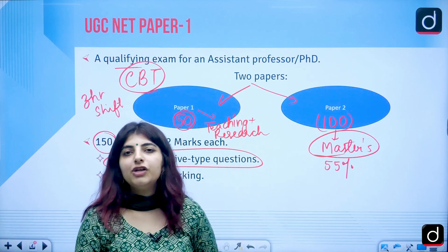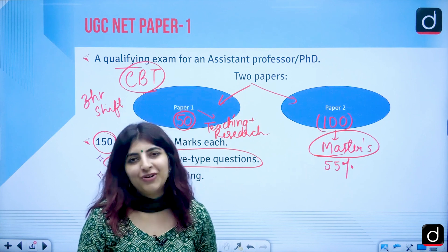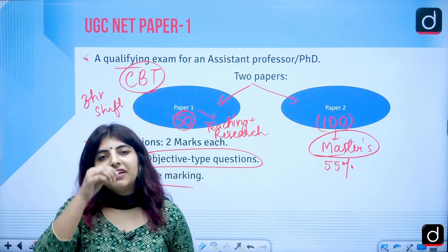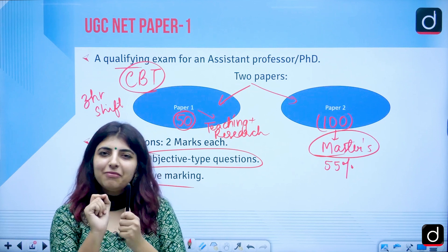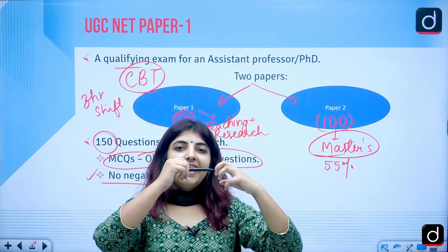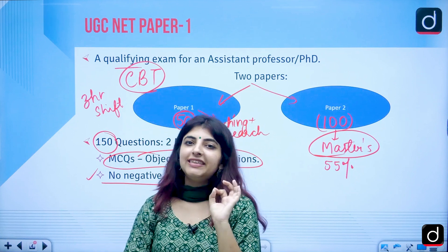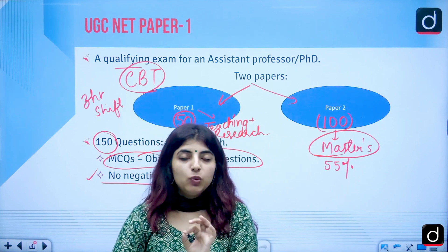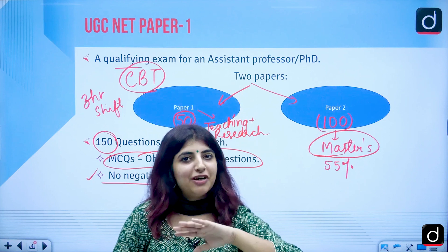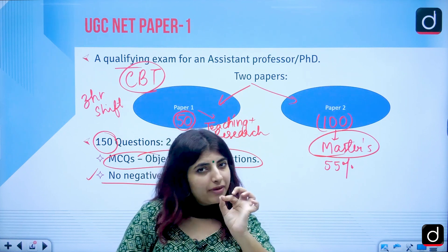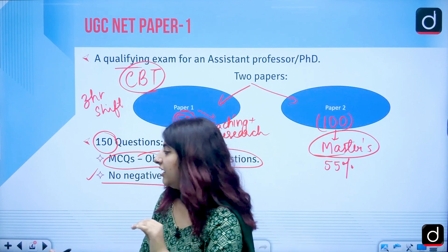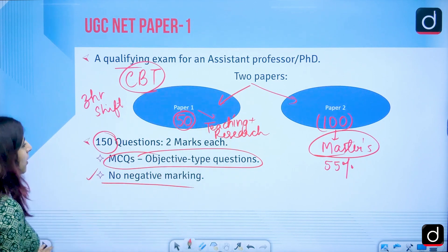The exam is objective or MCQ type with four options A, B, C, D. There is no negative marking, which is a plus point. However, accuracy matters because your percentile in UGC is measured by it. We do not want to answer questions we don't know. We can make an educated guess, but questions we don't know at all should be skipped even without negative marking.